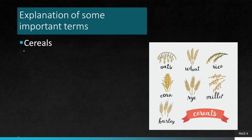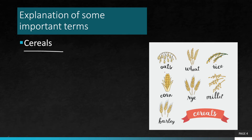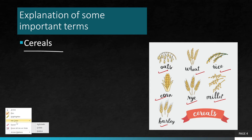The first important term is cereals. What are cereals? As you can see over here, we have oats, wheat, rice, corn, rye, millet, barley — all these come under cereals. So wheat, barley, rice and certain other grains like bajra also come under cereals. The term cereals came from the ancient Romans.